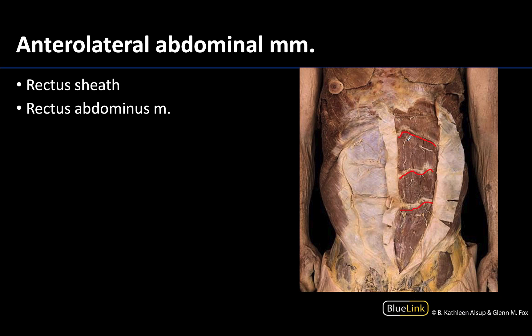Those are the muscles of the anterior lateral abdominal wall, in addition to the rectus sheath formed by the tendons of those anterior lateral muscles. Work your way through this material, and if there are any areas you're still confused about, it's always a good idea to reach out with questions. Thank you for your time, and I will see you at the next station.